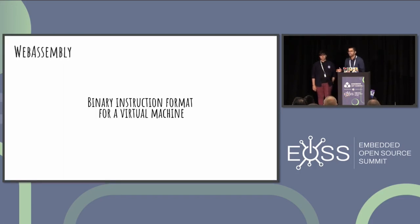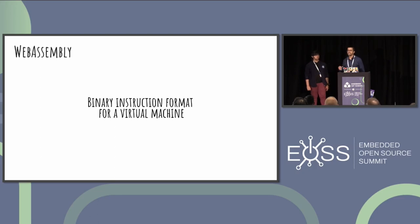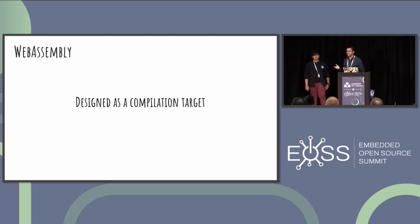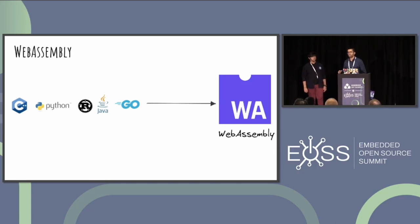Starting off with what exactly is WebAssembly. Some of you who have been attending sessions at the embedded IoT summit might have watched a previous session around edge devices and WebAssembly. So not to waste a lot of time, just a primer for those who might be new to the space. WebAssembly is a binary instruction format primarily meant for compiling source code from multiple languages into one single binary format that can then be run across multiple platforms. It's been designed as a compilation target and supports different types of languages — functional, object-oriented, and even scripting languages. Today we have support for more than 20 languages that can be compiled into the Wasm binary with their appropriate toolchains.